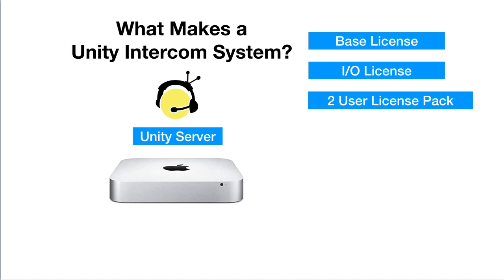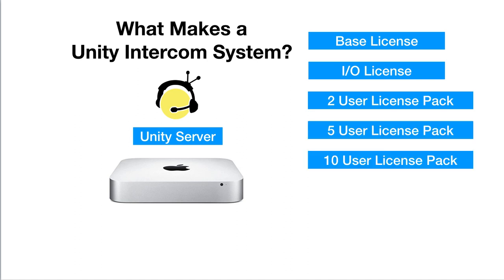Next, we're going to need user licenses, and we sell them in groups — 2, 5, and 10 user license packs. For example, if you bought a base license, the IO, and a 10-user license pack, that would give you a total of 13 users, because three come with the base license. At this point you're actually potentially done, because these are one-time purchases, not subscriptions. With this, 13 people can log into your Unity Intercom system, and with the IO license you have the ability to connect to other audio devices and bring that into your Unity Intercom.